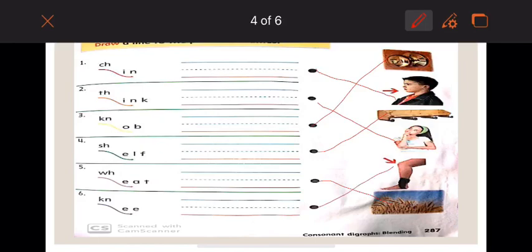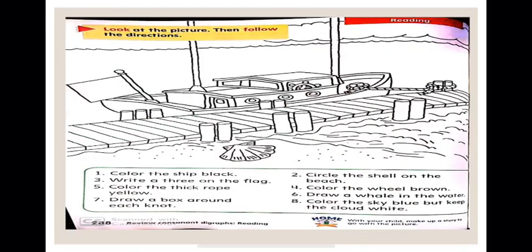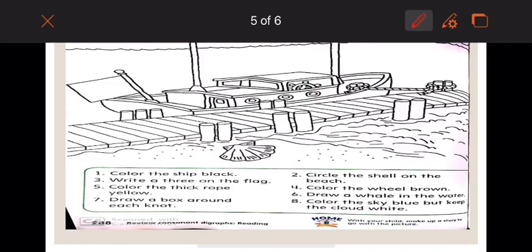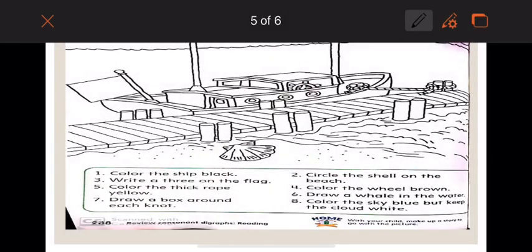And I want you please to write the words neatly on the lines. Now, the next page, they are asking you to do different things. Number one, color the ship black. I have to color all the ship in black.